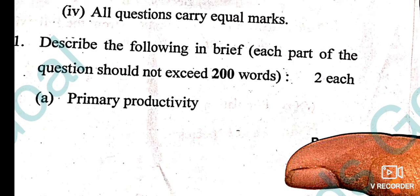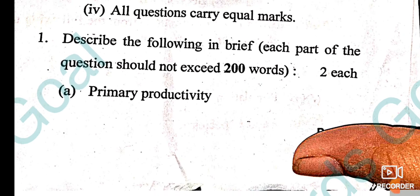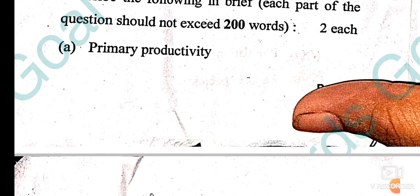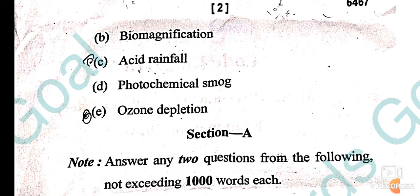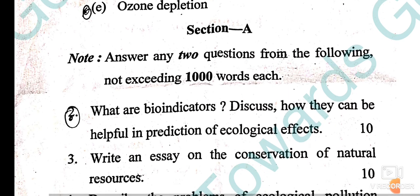The first question says: describe the following in brief — each part should not exceed 200 words. The topics are: primary productivity, bio-magnification, acid rain, photochemical smog, and ozone depletion.